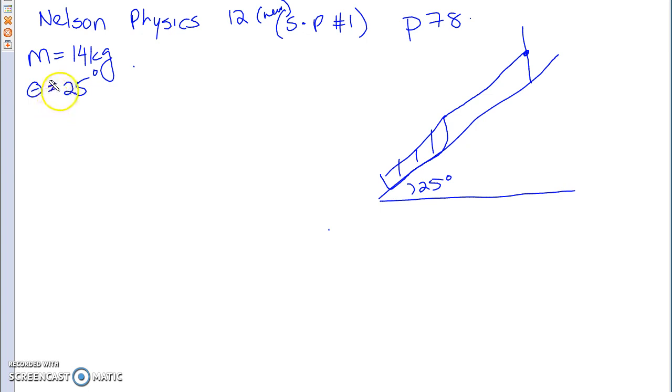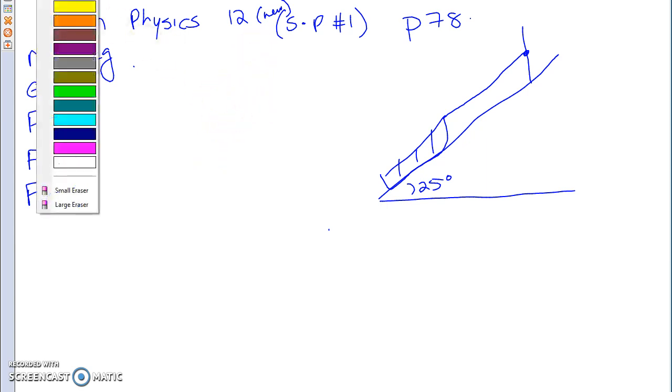The hill is very icy, which means friction Fk is negligible, so let's say it's zero. The rope is parallel to the hill as shown. Calculate the magnitude of the tension in this rope, and calculate the F normal. Those are the two things we're looking for. First things first, what will my FBD look like?